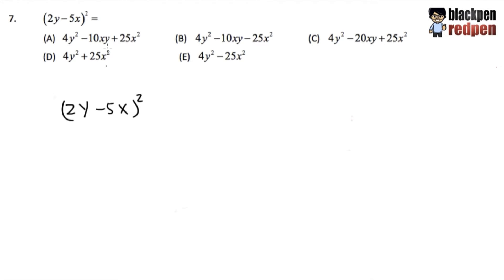For question number 7, we are going to work out (2y minus 5x) raised to the second power. As you can see, I wrote down the question right here, and let me show you the correct way to do this.